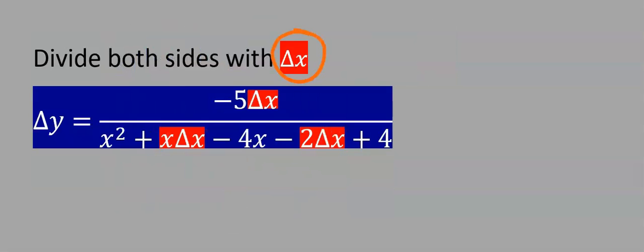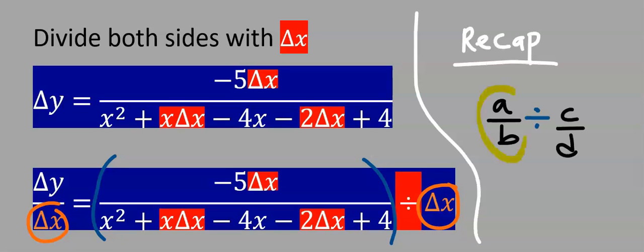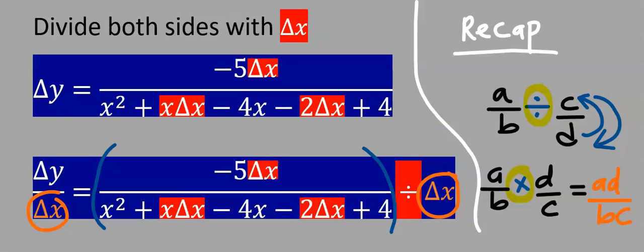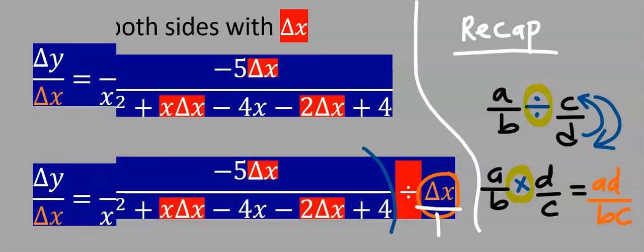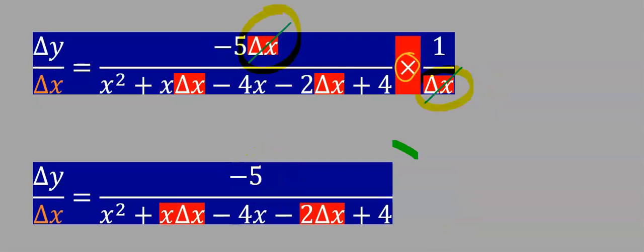Next, divide both sides by Δx. I'm going to divide this side by Δx and likewise divide everything here by Δx. Recall: if I have A/B ÷ C/D, changing the division sign to multiplication flips D up and C down. Applying this here, remembering that Δx here is over 1, we change this division to multiplication and it flips 1 up and Δx down. Hence this Δx cancels this Δx, and we are now left with the simplified expression.